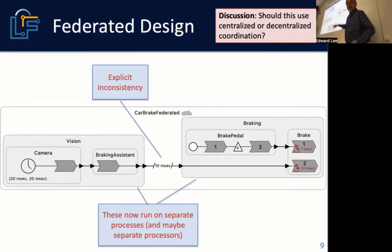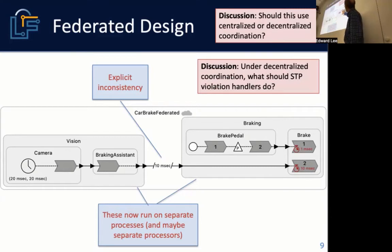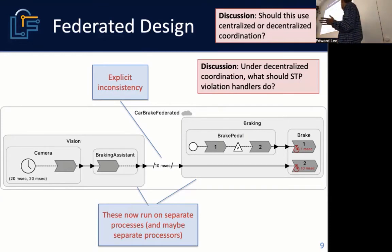In the decentralized coordinator, you have a safe-to-process violation handler that you can write. Very specifically: using decentralized coordination, you get a brake pedal command, process it, then later receive a message with an earlier timestamp — that's a safe-to-process violation. If you've provided a handler in your code, it will be invoked. The message says you received an event with an earlier timestamp, so you can no longer meet Lingua Franca semantics.